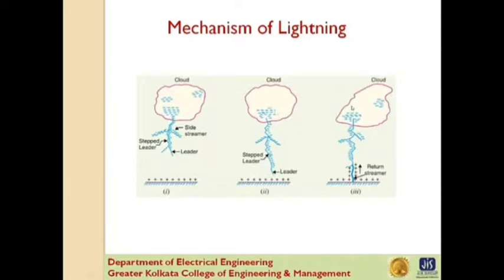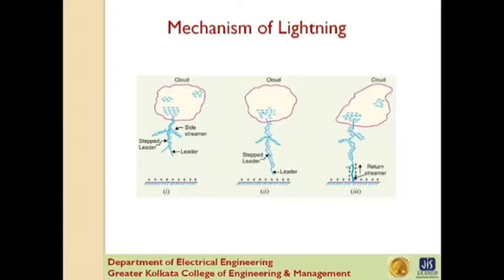The action can be compared with the closing of a switch between the positive and negative terminals, the downward leader having negative charge and the return streamer having positive charge. This phenomenon causes a sudden spark which we call lightning, and with the resulting neutralization of much of the negative charge of the cloud, any further discharge from the cloud may originate from some other portion of it.